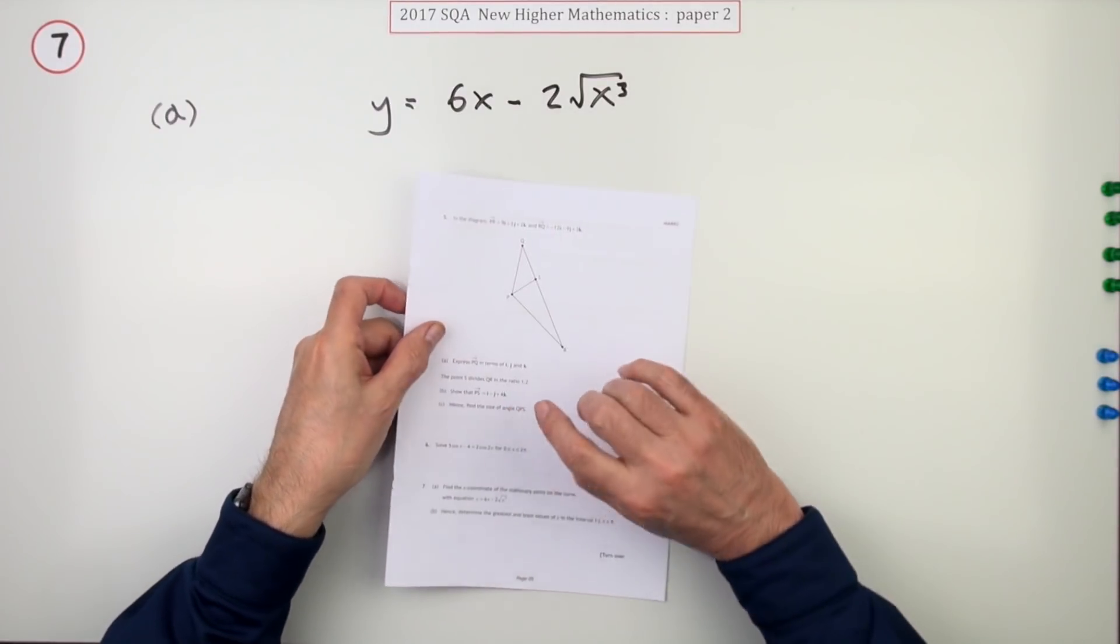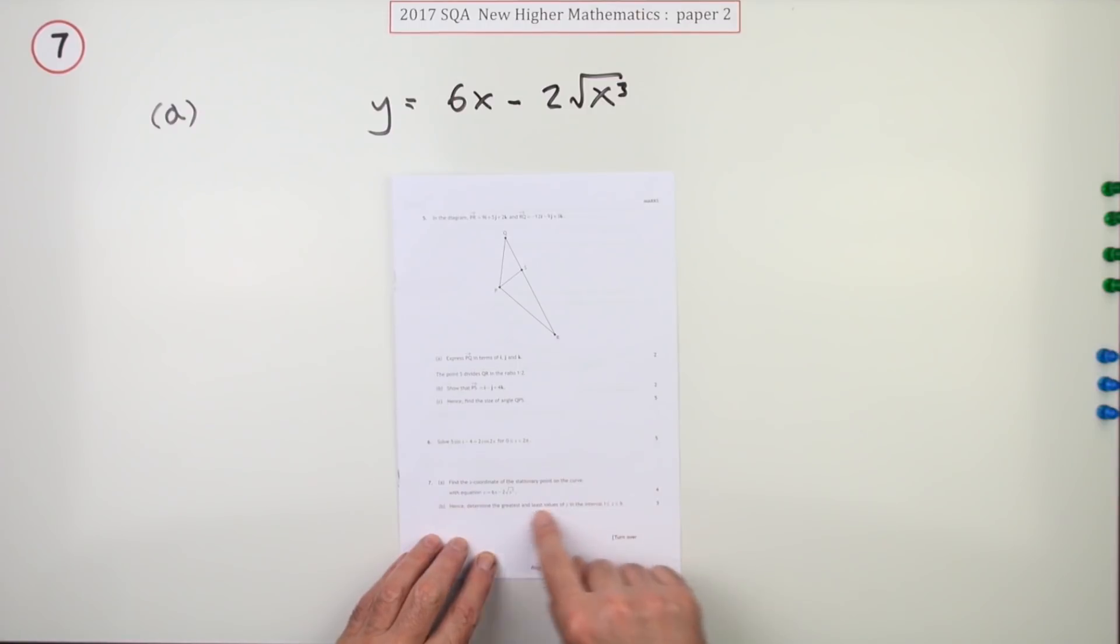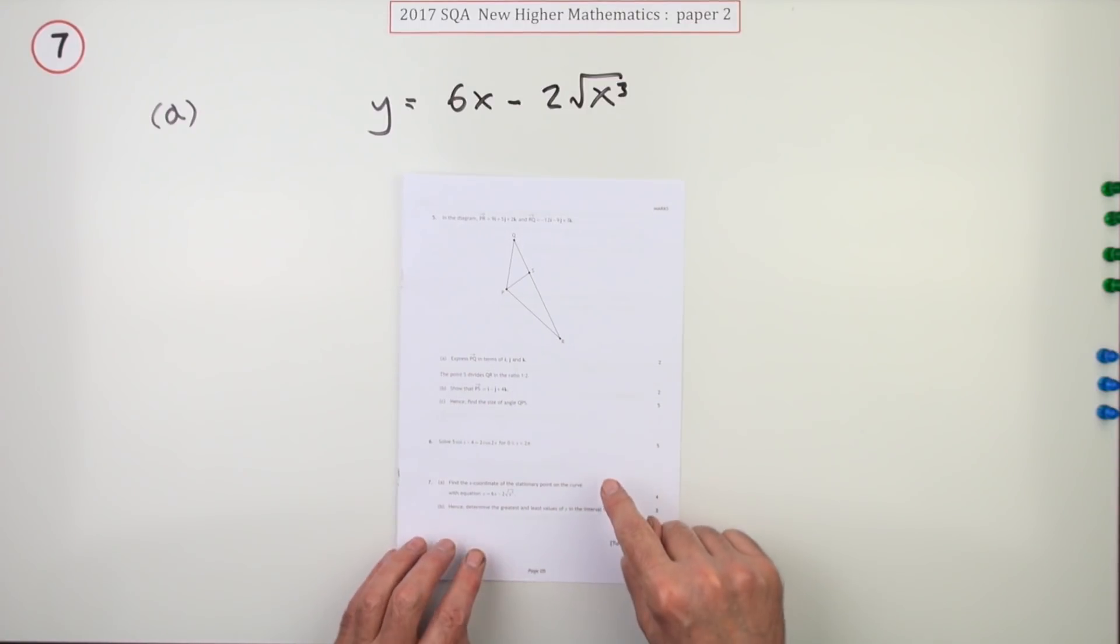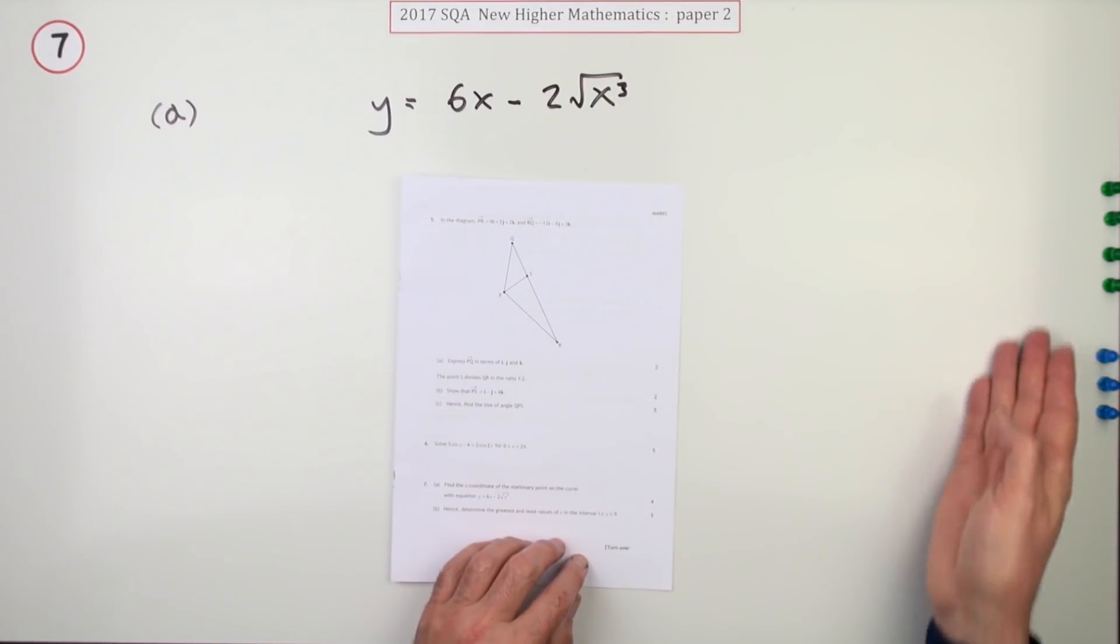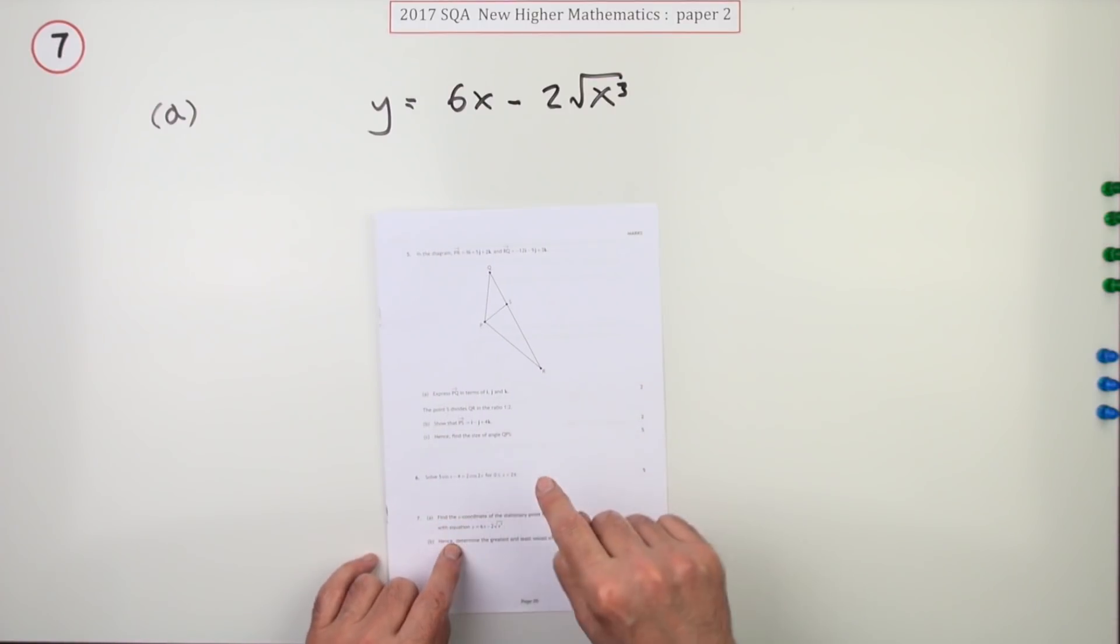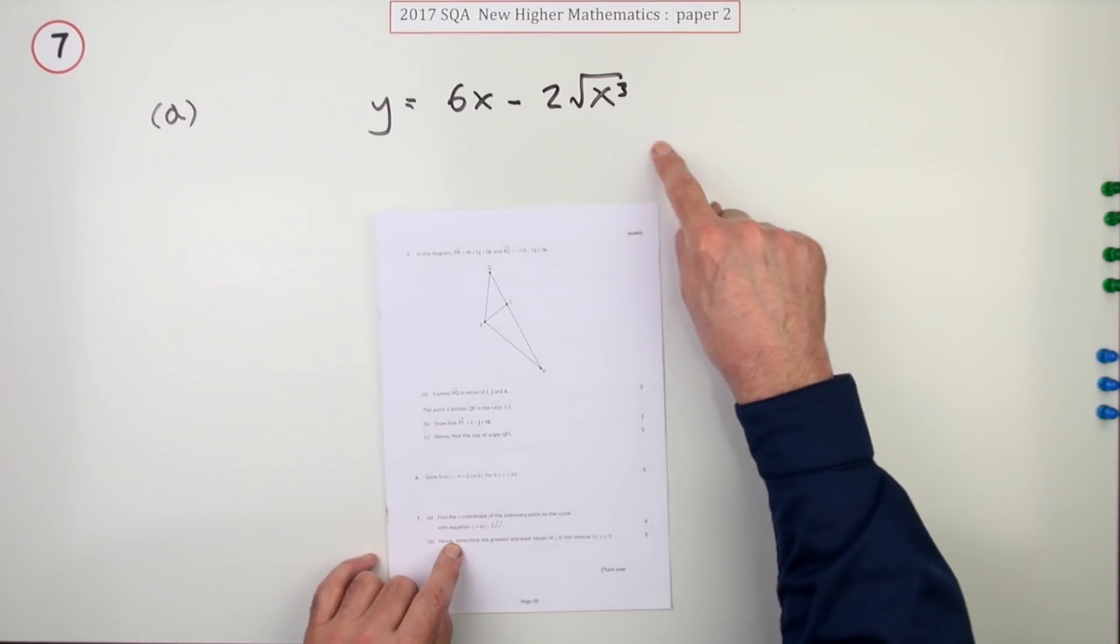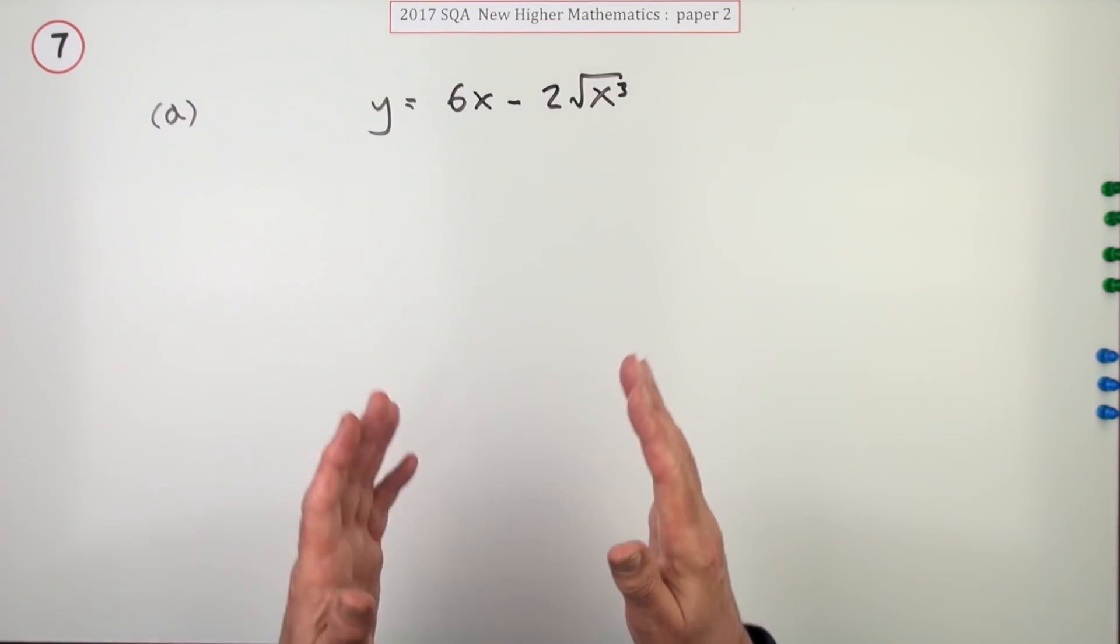Number seven from paper two of the 2017 New Higher Maths. Greatest and least values in an interval. It mentions stationary points but notice it's not interested in their nature because their nature is irrelevant to this type of question. It's seven marks. The first part is simply find the x coordinate of the stationary point on the curve with this equation. No mention of finding its nature, just what's the x coordinate of the stationary point.